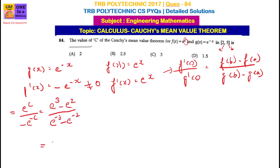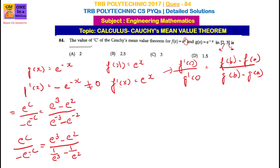Substituting into the formula: e power 3 minus e power 2, divided by e power minus 3 minus e power minus 2. This simplifies to e power 3 minus e power 2 divided by 1 over e power 3 minus 1 over e power 2, on the right-hand side. On the left, we have e power c divided by minus e power minus c.